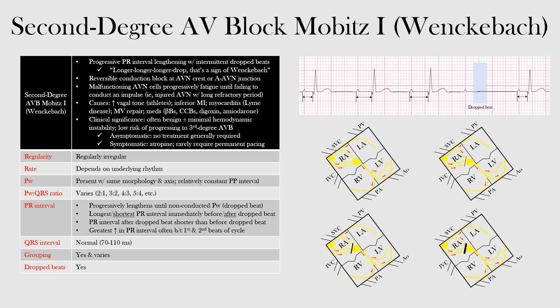These are important to differentiate, as not only is the location of the anatomic problem different, but also the management. While Mobitz type 1 is often benign, Mobitz type 2 has a greater risk of progressing to complete heart block.